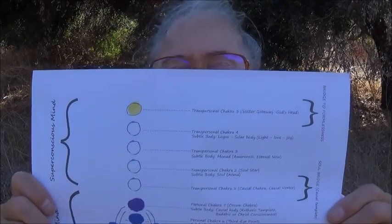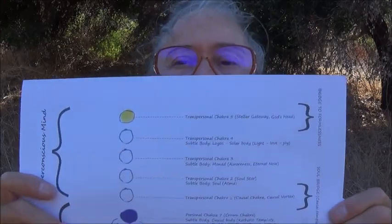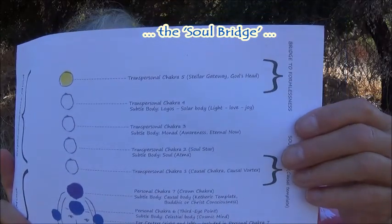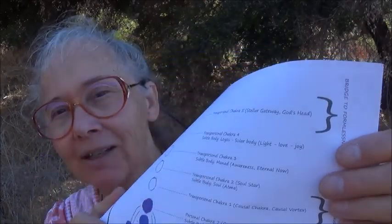I'll show you another look, and you'll also find a better image at the end of this video. Here you can see the superconscious mind again, the bridge to the soul, the bridge to formlessness, and the three chakras in between representing the soul, the monad, and the logos — which is getting quite a ways up there. These are tools for lightworkers for the coming times. God bless you all, keep you safe, and be with you through all your days.